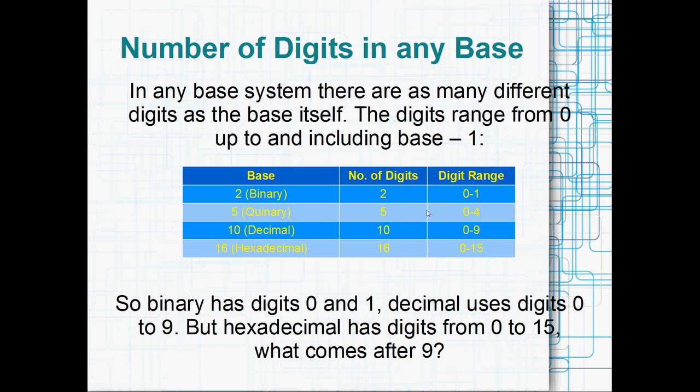And there's 0 and 1. In quinary, which is base 5, there's five different digits, and there's 0 to 4. So 0, 1, 2, 3, or 4. If you're writing in base 5 and you use the digit 6, it's just wrong. That would be the same as using a digit 2 or 3 in binary. It just doesn't exist. Anyway, in happy friendly decimal, there's 10 digits and they range from 0 to 9.